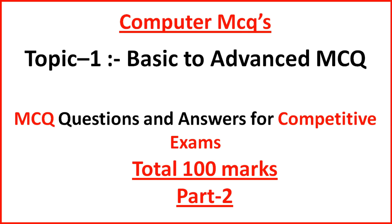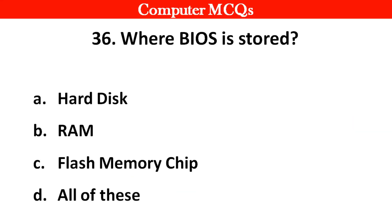Question no. 1: Where is BIOS stored? Options A. Hard disk, B. RAM, C. Flash memory chips, D. All of these. Right answer is option C: Flash memory chip.